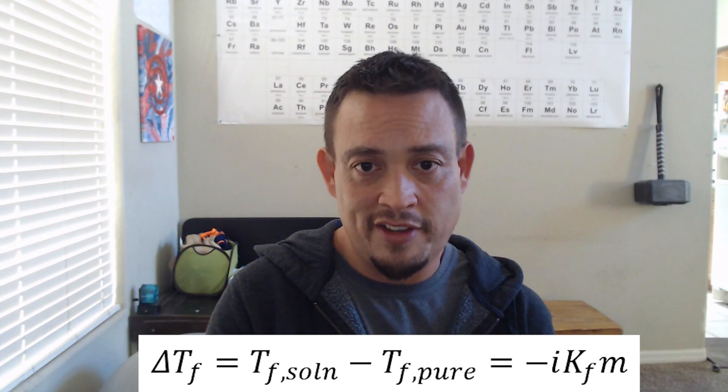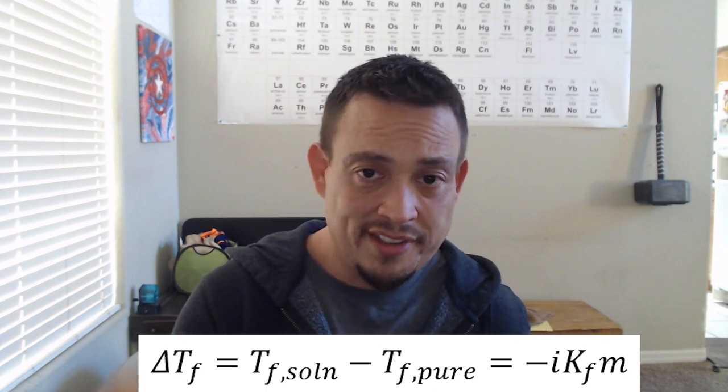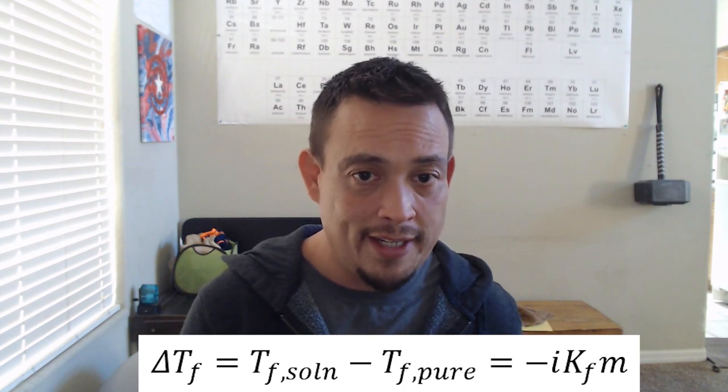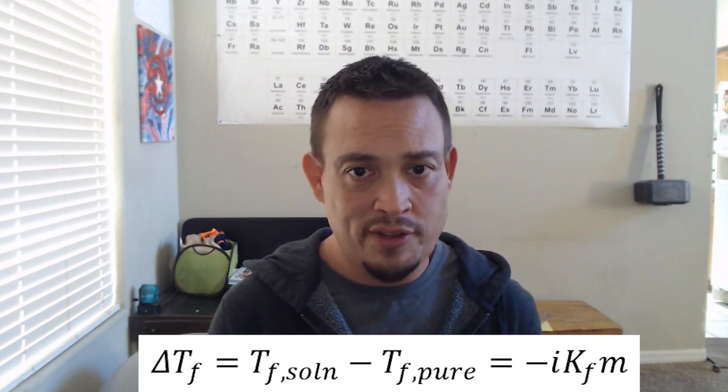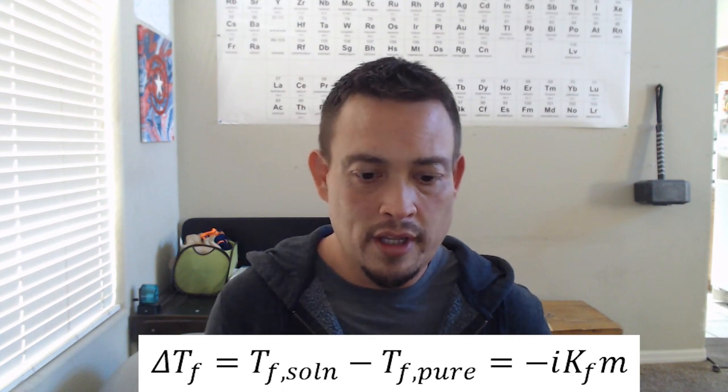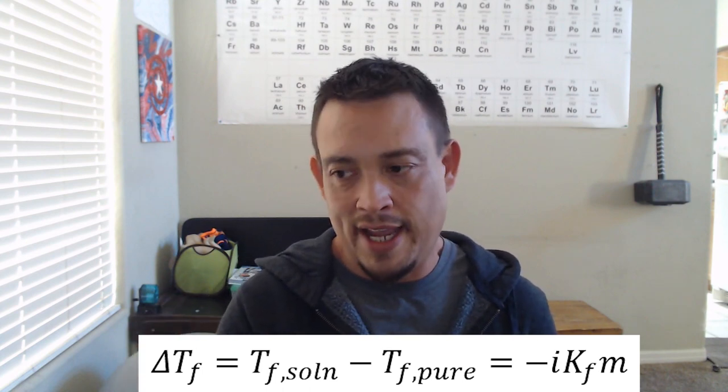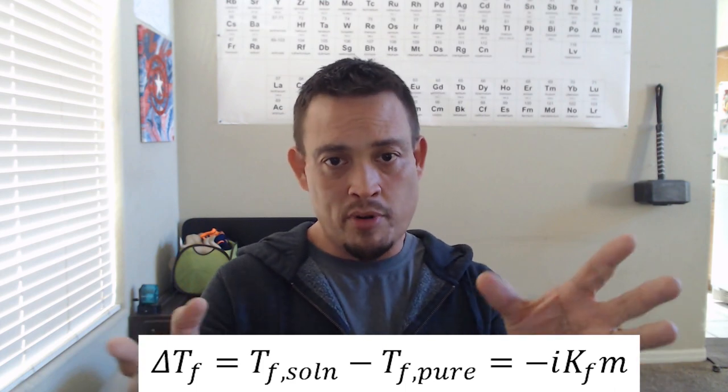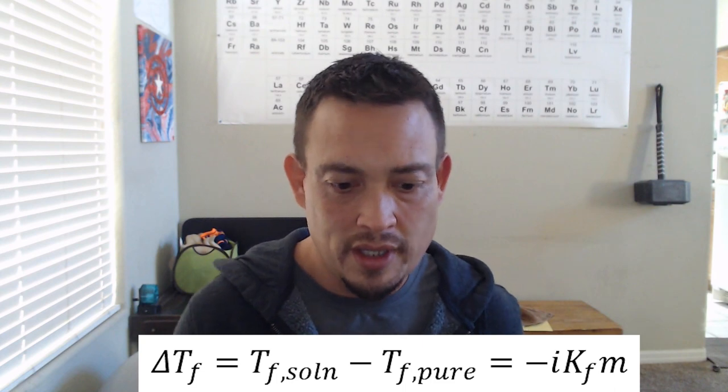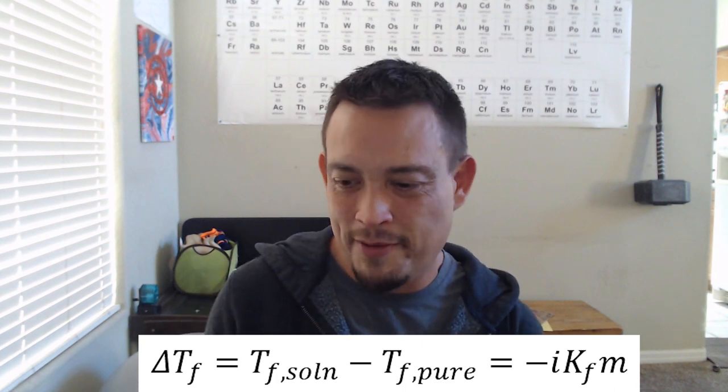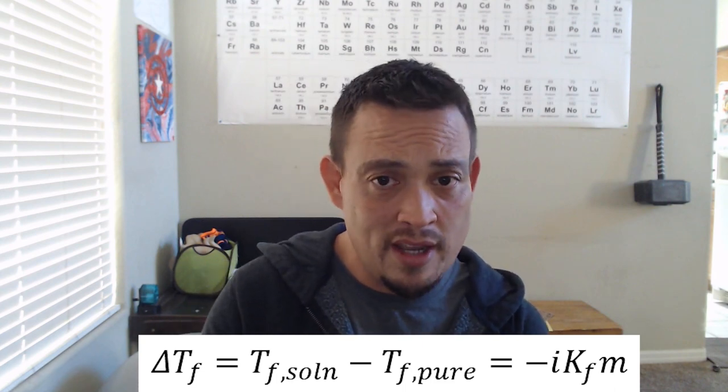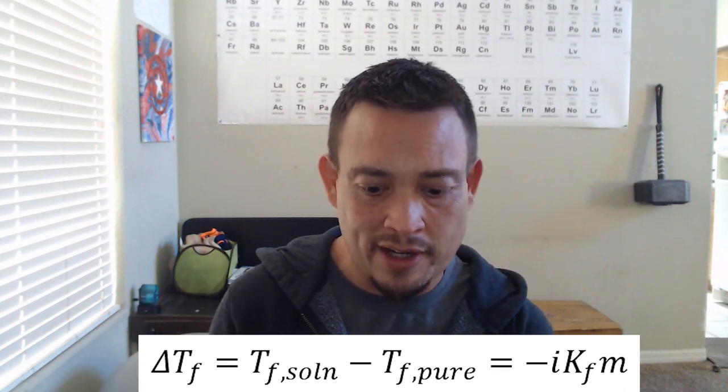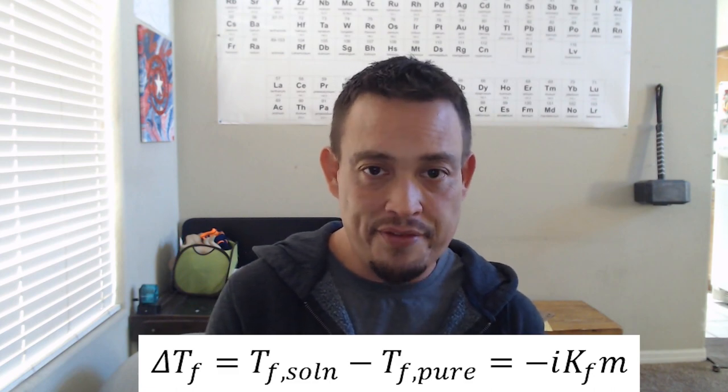So the i is the Van't Hoff factor. That's how many effective particles are in solution. So for this case, in today's experiment, we are dissolving naphthalene into cyclohexane. Naphthalene should not dissociate. So the Van't Hoff factor is one. In the case where it would dissociate, say we're looking at water, putting salt into it, NaCl, that would break apart into ions, the Van't Hoff factor there would be two. This can be kind of muddled a little bit depending on the solubility of things that dissociate. But the main thing I want you guys to remember for today's experiment is the Van't Hoff factor is one.